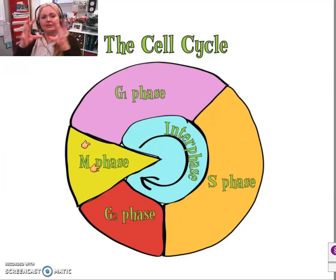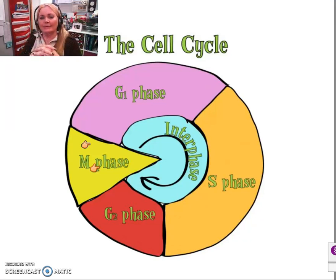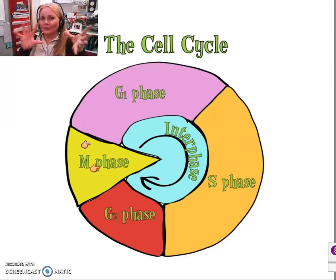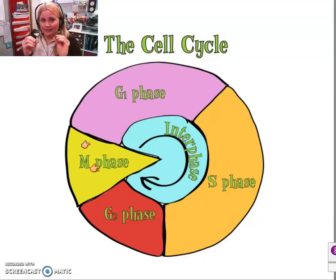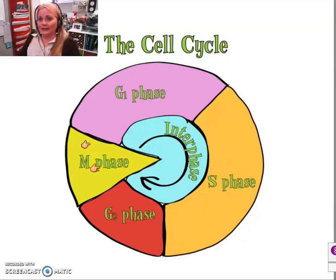The cell completely separates in what's called cytokinesis. That's what happens during the M phase, but in order for that to be successful, you have to have two sets of DNA going into the M phase.